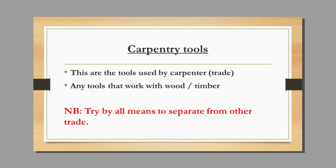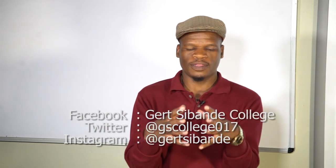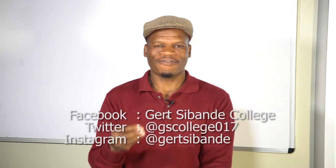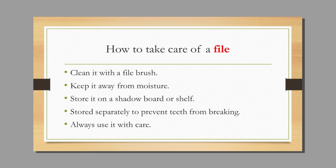Carpenter tools are the tools used by the carpenter, whether you are working with roof work or bricklaying. You must know exactly how many of those tools need to be within your vicinity. When we talk about a file, we are talking about the file used to sharpen steel metal — it can be a knife or any tool that needs sharpening. After use, clean it with a file brush or wire brush, keep it away from moisture to prevent rust, and store it on a shadow board or shelf. Do not mix it with other tools as it will damage the teeth.